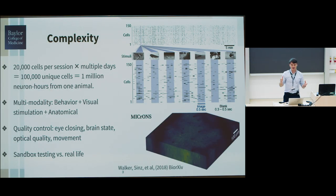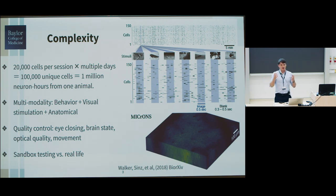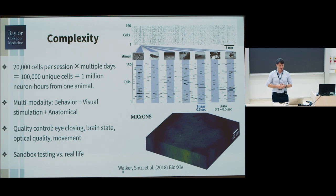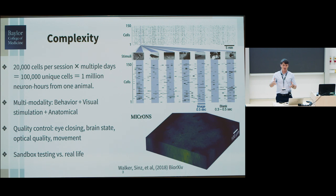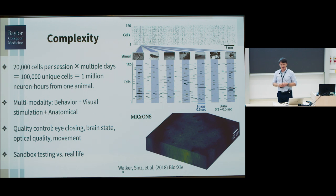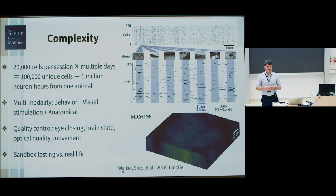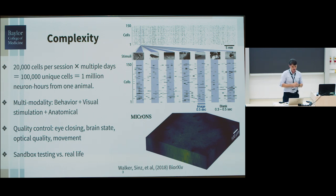To give some of the challenges: one is complexity. The mouse is imaged multiple times across multiple sessions. In each session about 20,000 cells are recorded, and over multiple days the full volume of one cubic millimeter contains about 100,000 neurons. After you show all the movies, you end up with about 1 million neuron-hours from one animal.